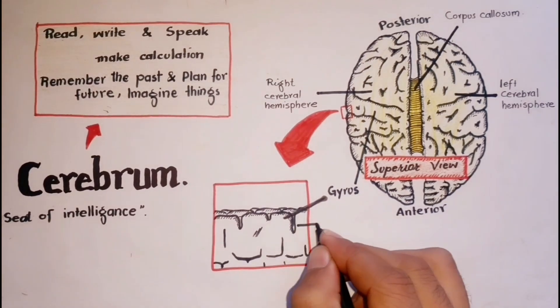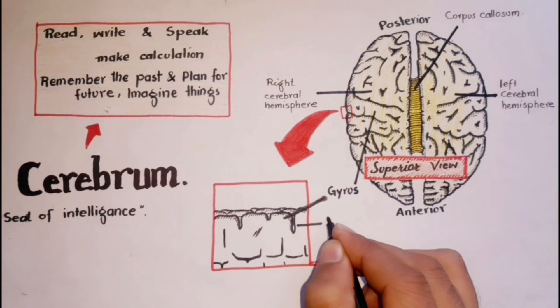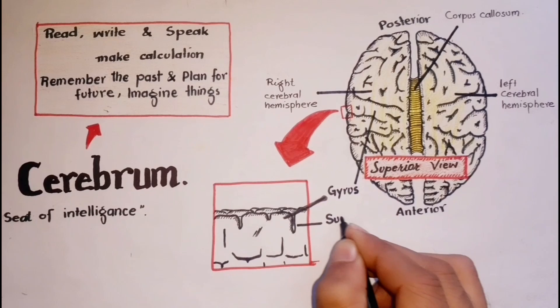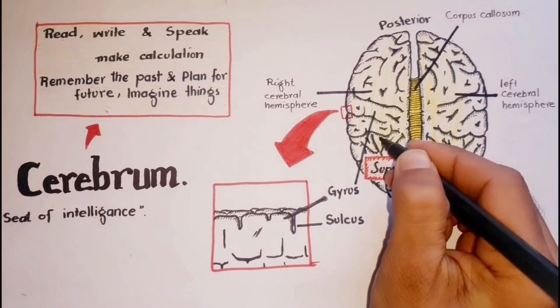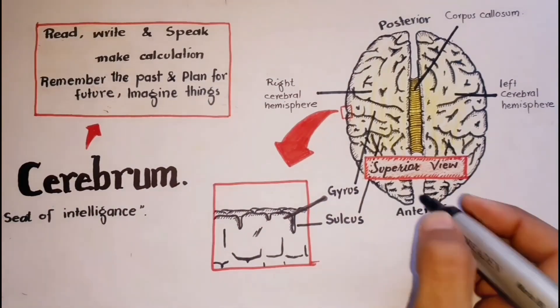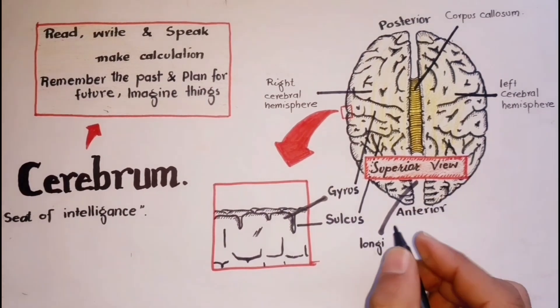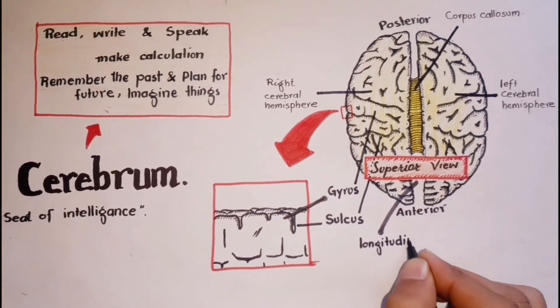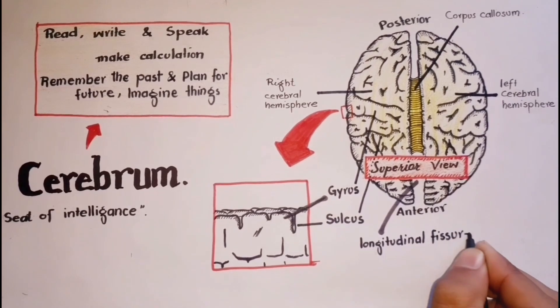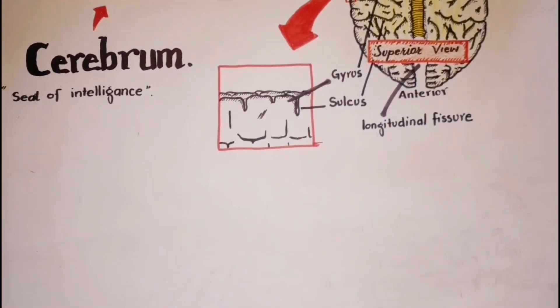These gyri are separated by grooves. A shallow groove or depression is called a sulcus and a deep groove is called a fissure, as the longitudinal fissure separates the right and left cerebral hemispheres. Several sulci divide each hemisphere into lobes.